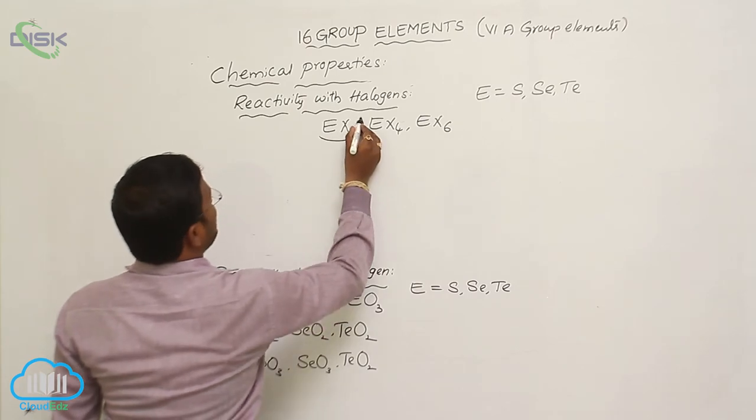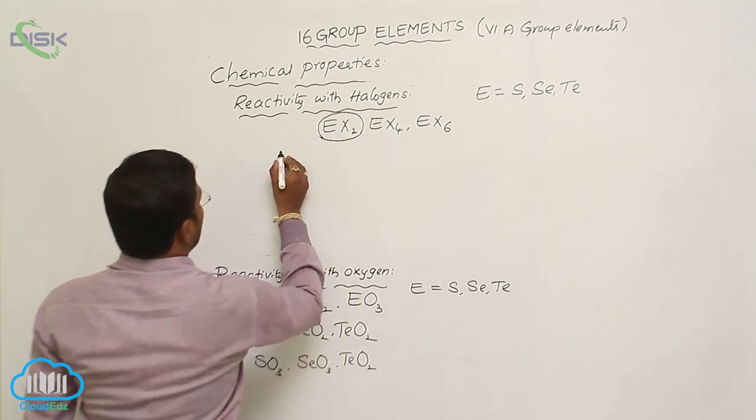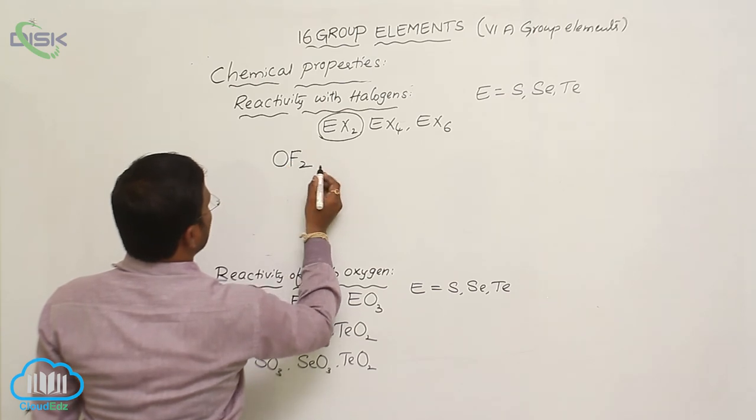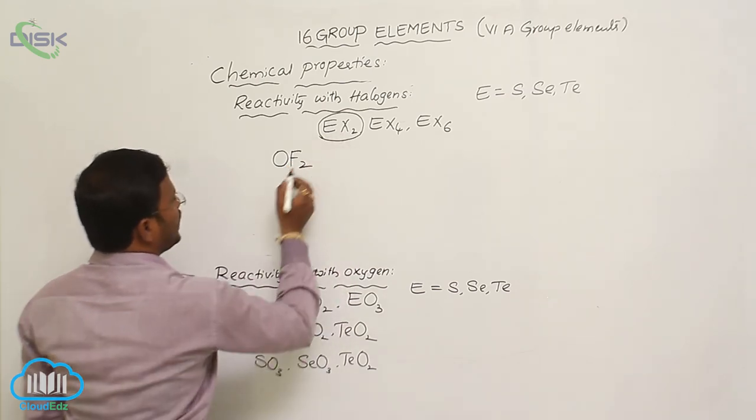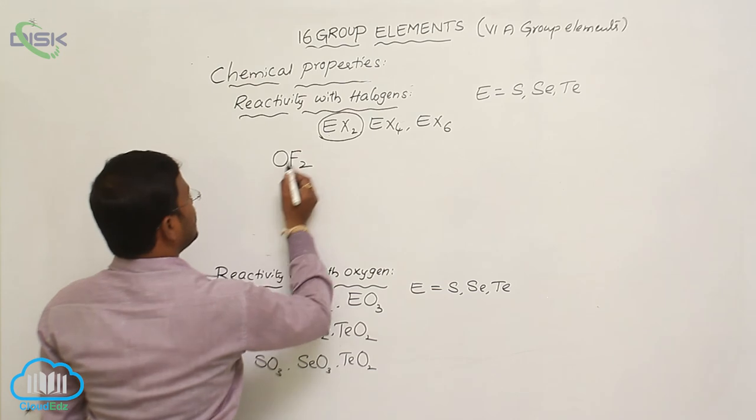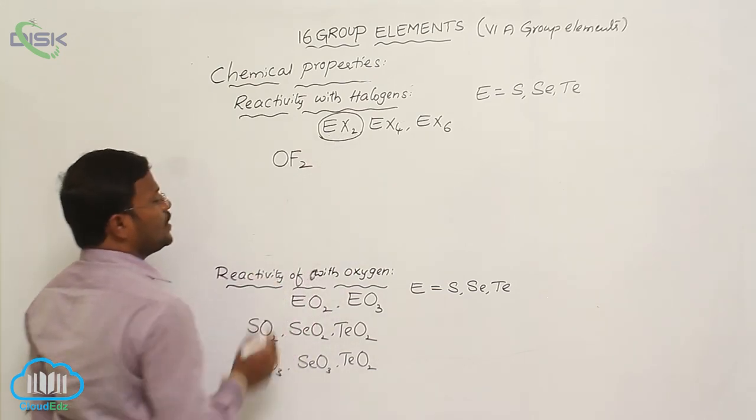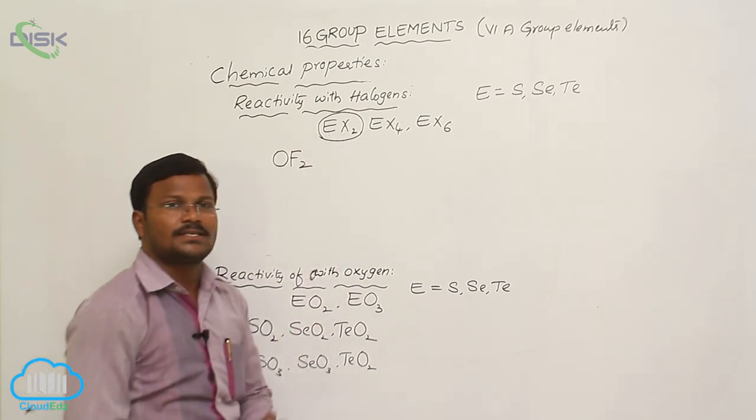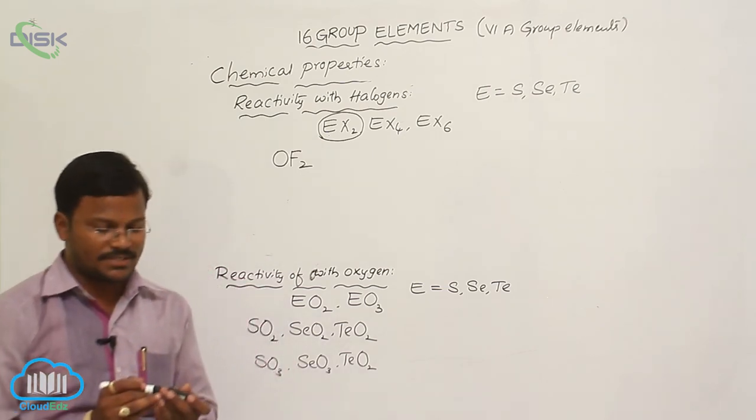In case of EX2, a rarely OF2 present which is having the general molecular formula EX2, where E is equals to oxygen, X is equals to fluorine, which is called as oxygen difluoride with minus 2 oxidation state.